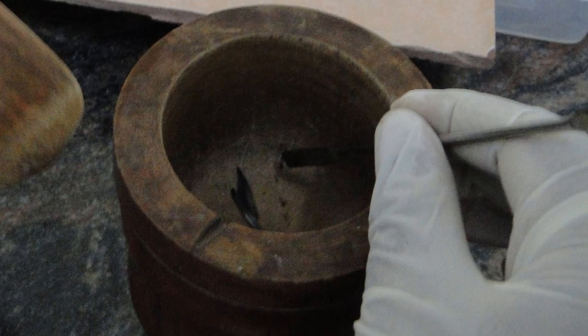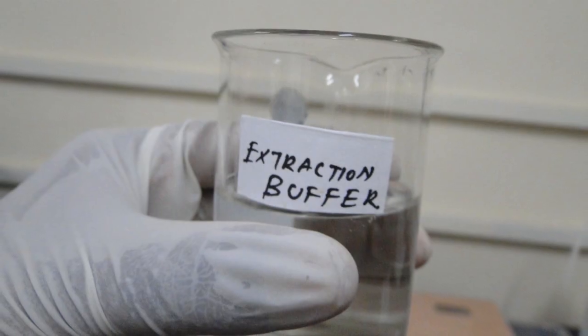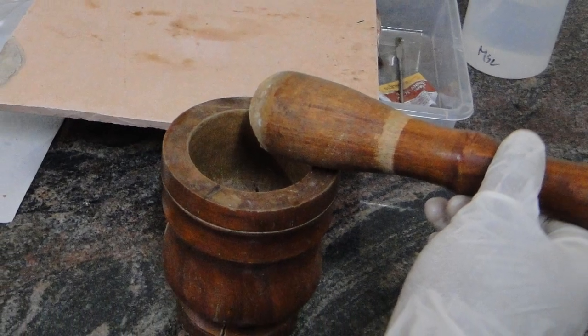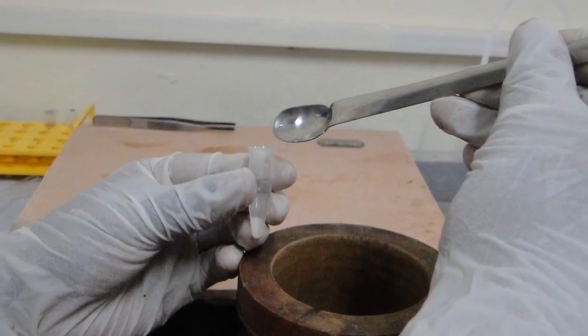Procedure: Cut a small portion of zebrafish fins and put it in a mortar. Add 600 microliters of extraction buffer from icebox to the mortar and make it into a paste. Transfer this paste into a new vial.